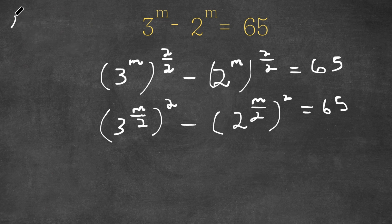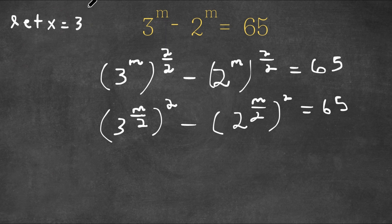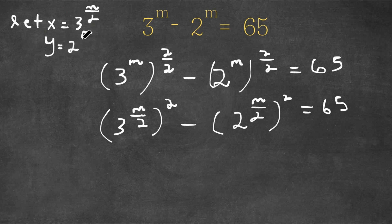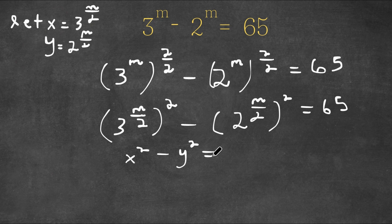Now I'm going to let the variable x equal 3 to the power of m over 2, and I'm going to let y equal 2 to the power of m over 2. So now I have x squared minus y squared is equal to 65.